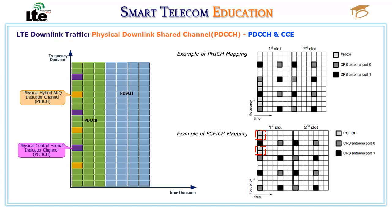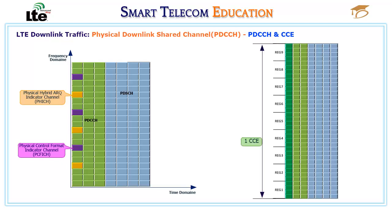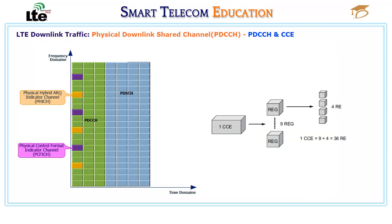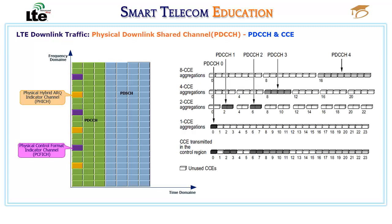PCFICH is mapped on OFDM symbol 0 of the first slot in all downlink subframes. PDCCH is made up of CCEs (control channel elements), and each CCE is made up of 9 resource element groups, which is 36 resource elements. PDCCH uses a concept of aggregation layers, which is a group of CCEs. There are 4 aggregation layers in the normal PDCCH.